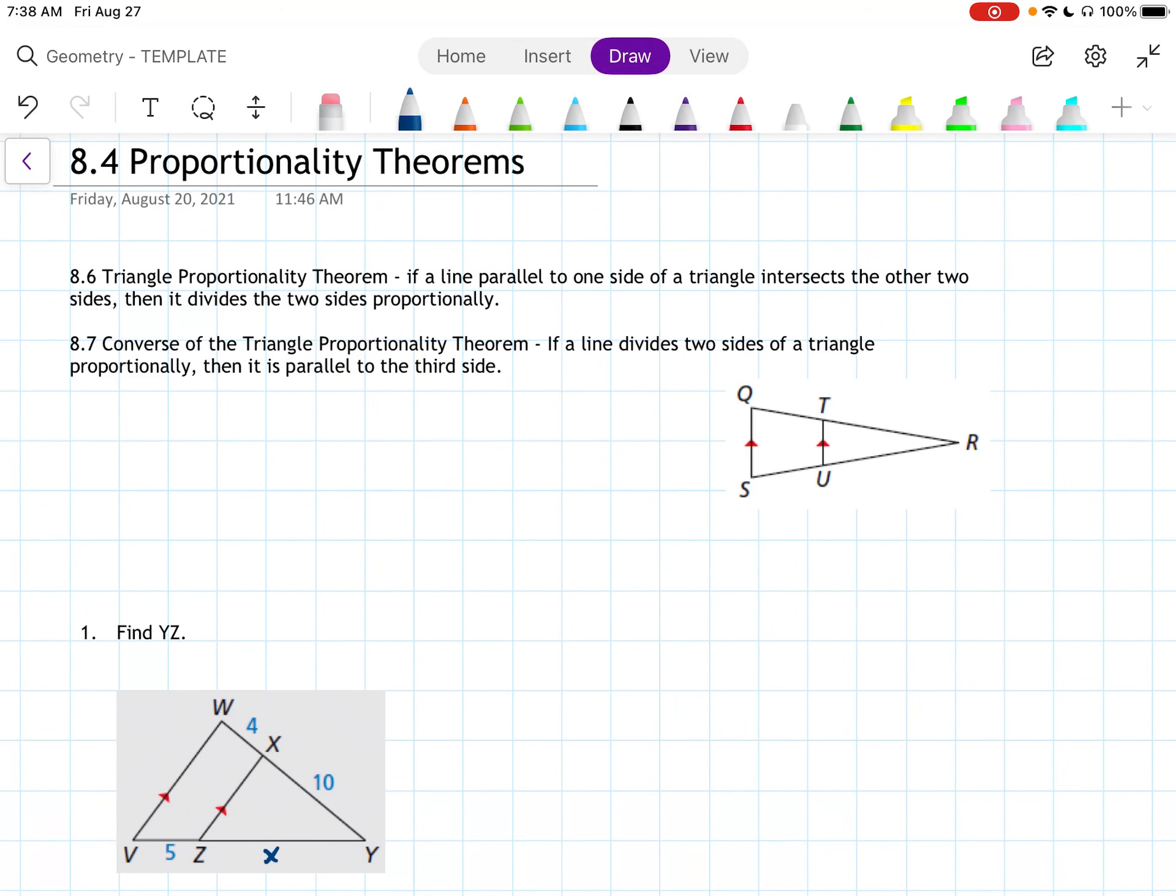Okay, 8.4 proportionality theorems. Theorem 8.6 and 8.7 are converses. 8.6 is the triangle proportionality theorem. If a line parallel to one side of a triangle intersects the other two sides, then it divides the two sides proportionally.